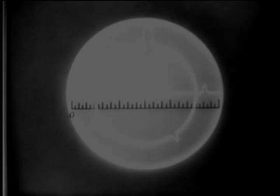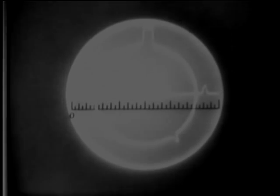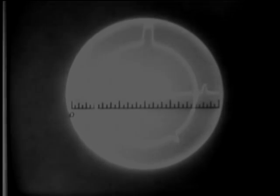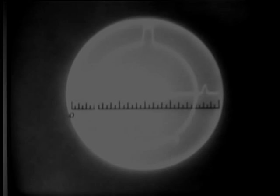As you can see, this scope gives us everything an A-scope did: a main bang, a target pip, and a baseline along which you measure range. But because our new baseline is circular, we can make it almost three times as long without increasing the size of the tube, thereby giving us a more precise means of measuring range.